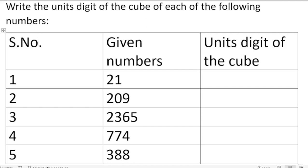Write the units digit of the cube of each of the following numbers. They have given some numbers, and for those numbers we have to find the units digit if we are doing the cube of that number. Suppose it is 21. If we are doing the cube of this number, they are not asking about the cube itself, they are asking what we get in the units digit if we do the cube.